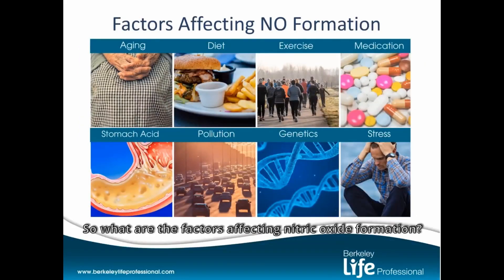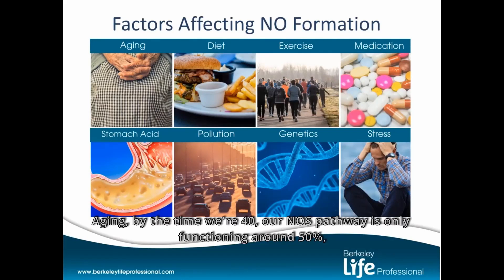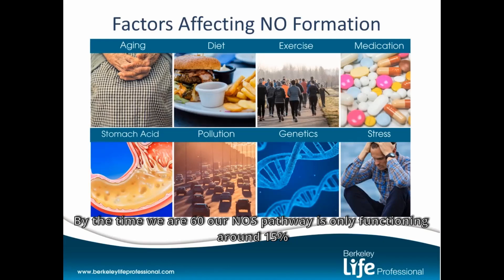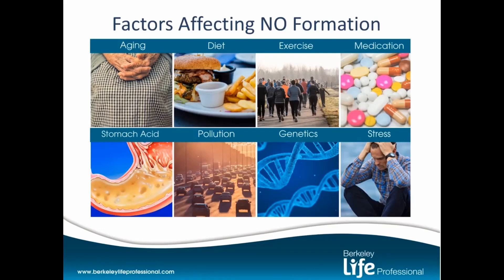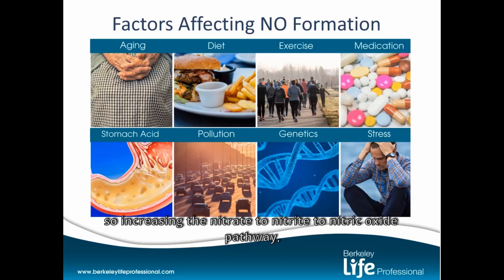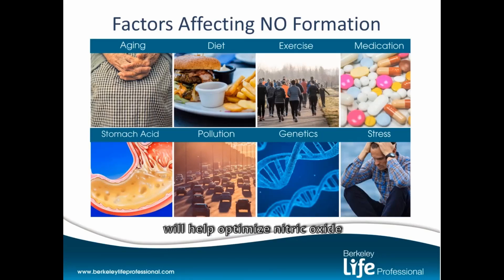What are the factors affecting nitric oxide formation? Aging is a major one. By the time we're 40, our NOS pathway is only functioning around 50%. By the time we're 60, it's only functioning around 15%. So increasing the nitrate-to-nitrite-to-nitric oxide pathway will help optimize nitric oxide levels.